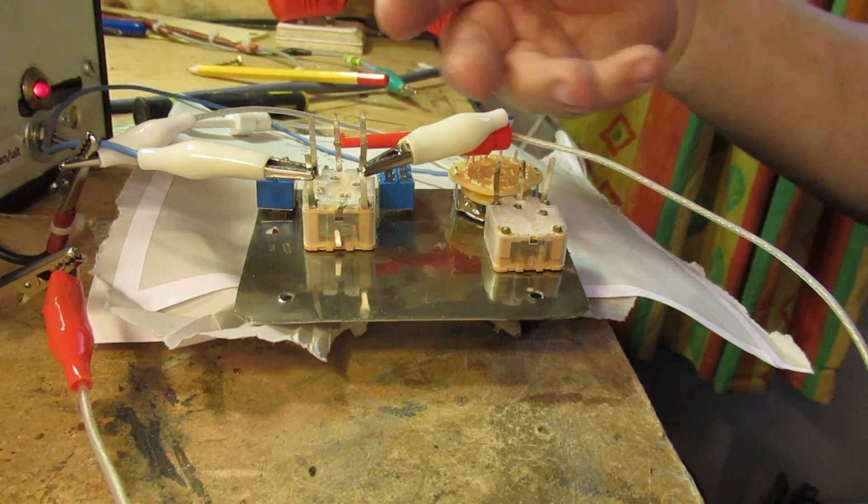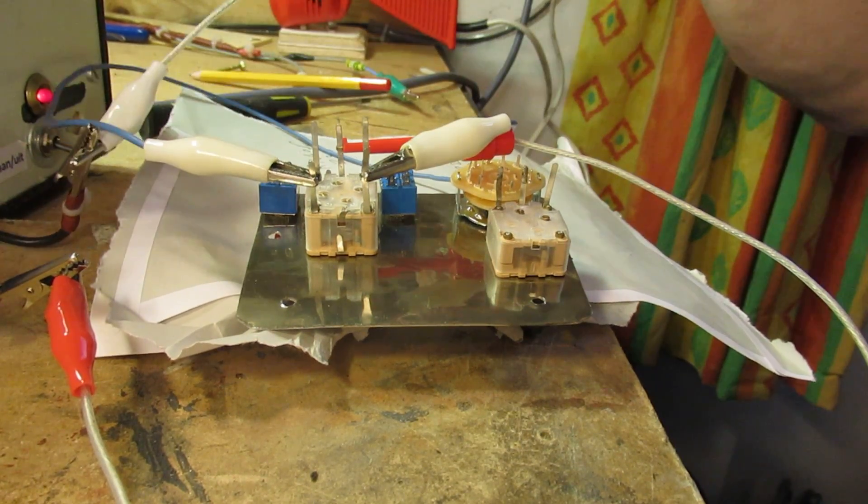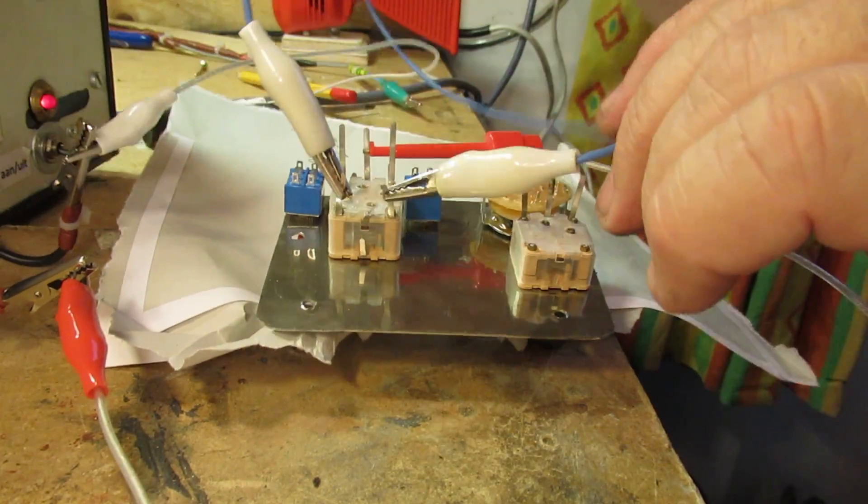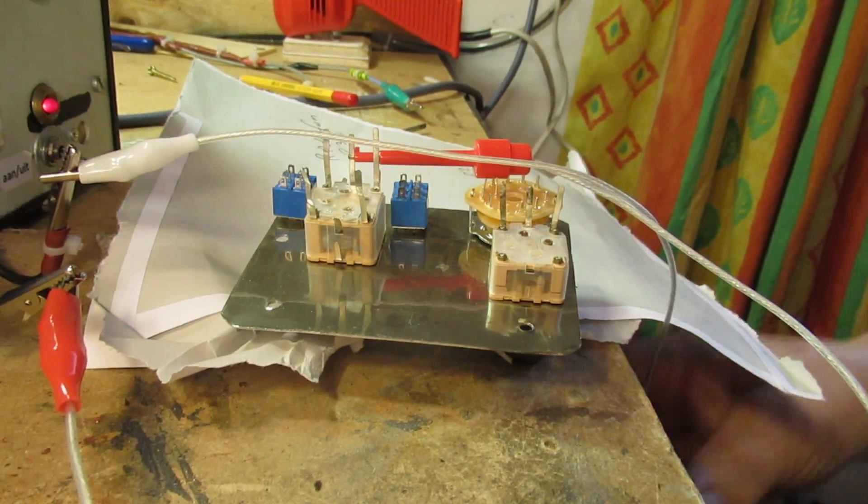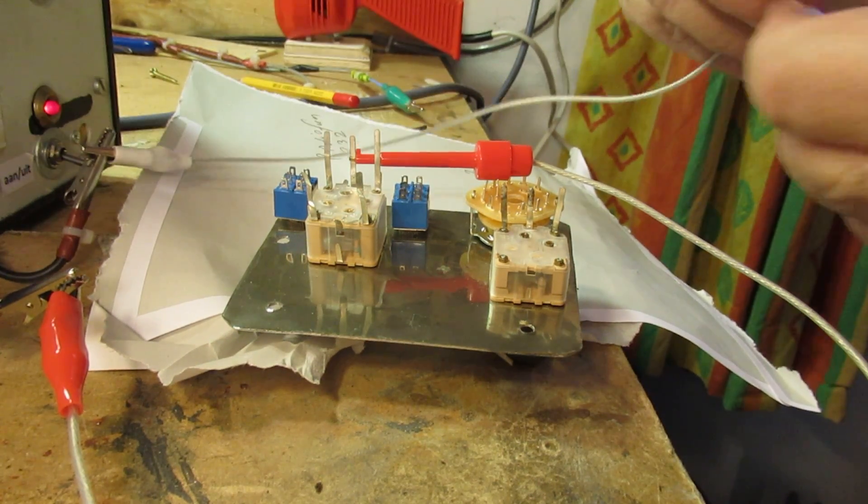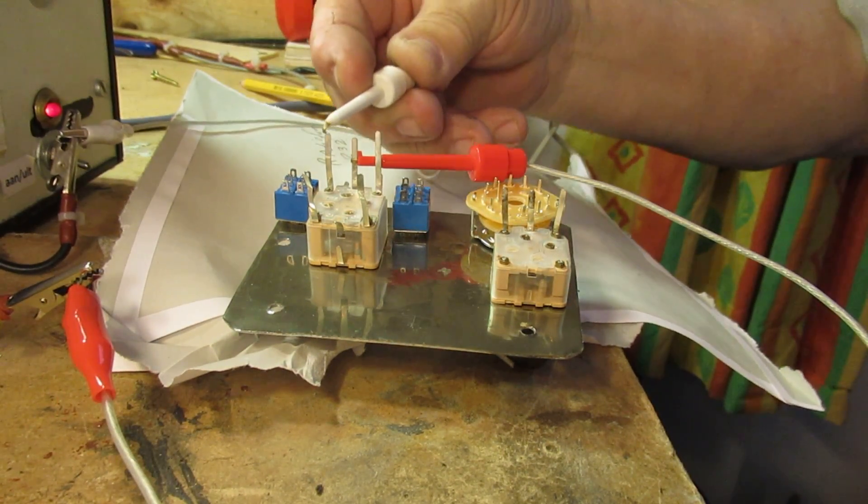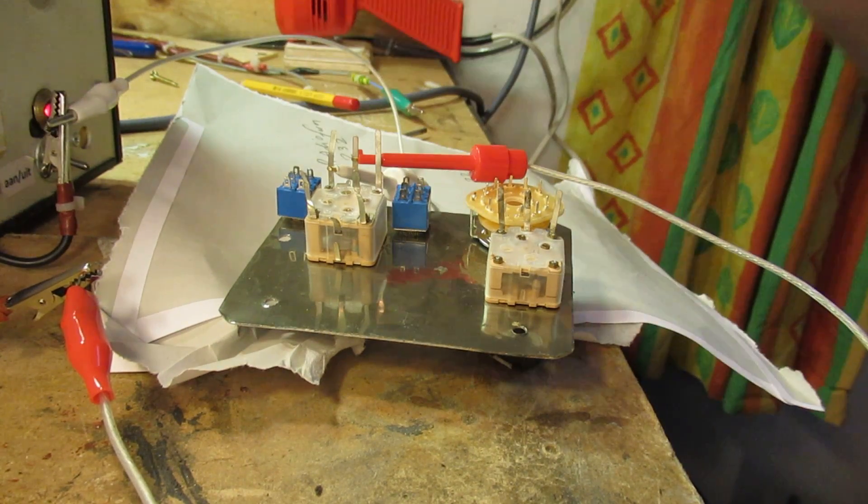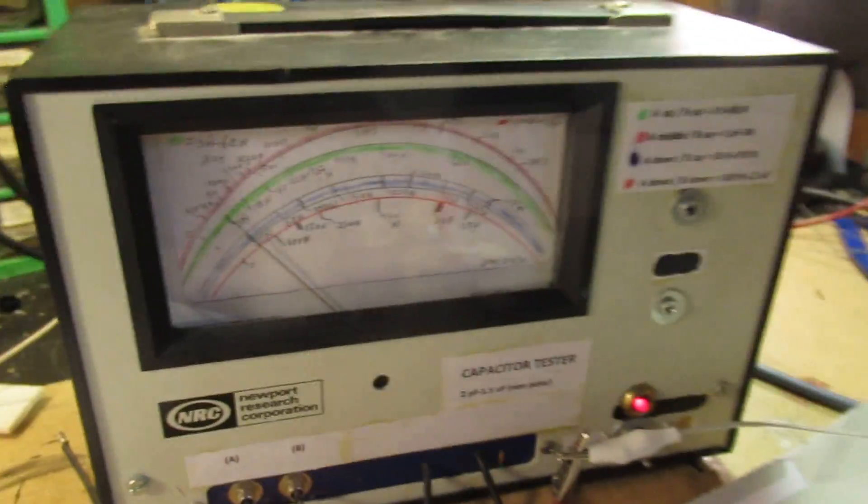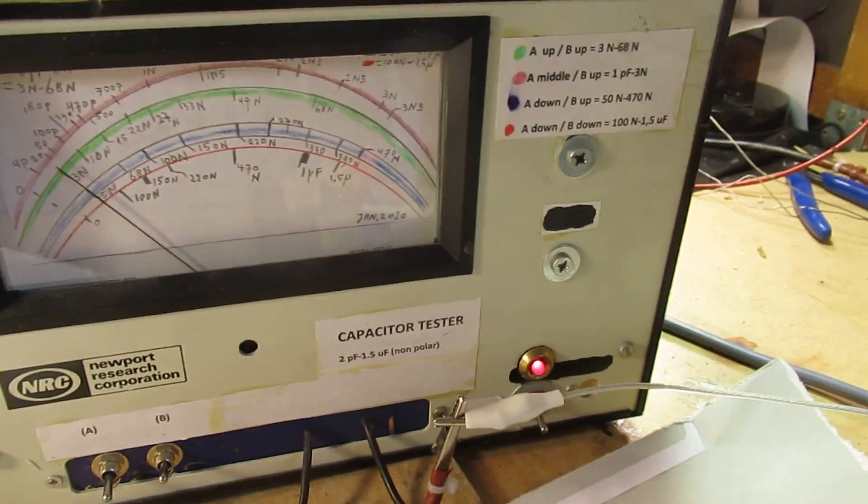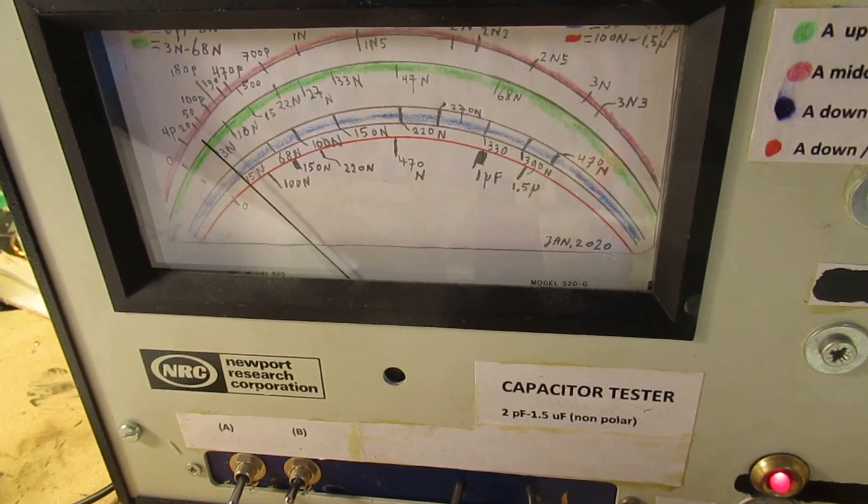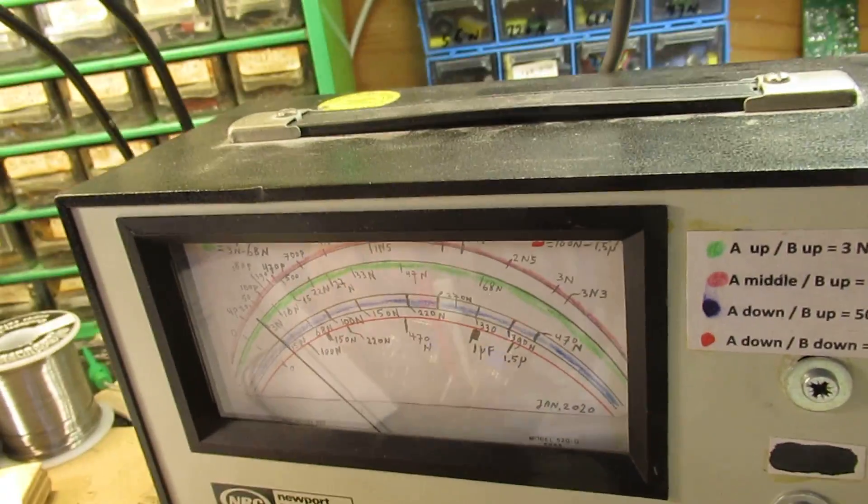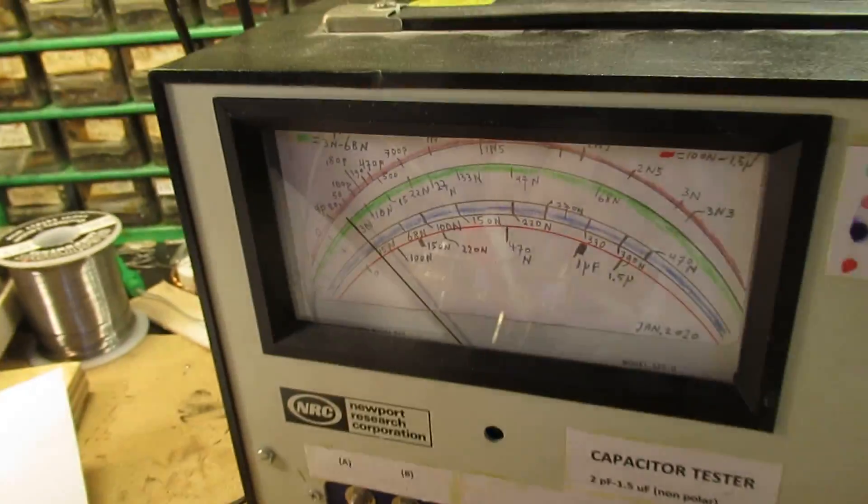Connect your tuning cap to the tester, and then look on the scale of your capacitor tester what the capacitance variation is. So I have to turn now, of course, the knob here. Let's see.